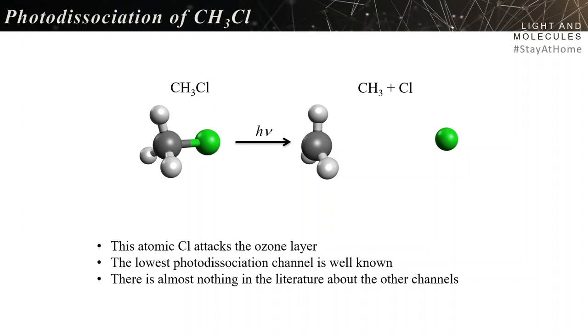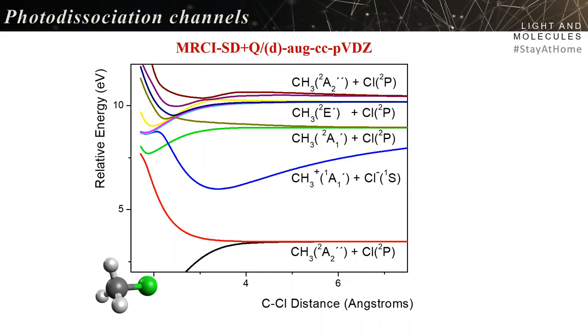Upon UV radiation, methylchlorine breaks into methyl radical plus chlorine, which is harmful to the ozone layer. The photodissociation is well known in the lowest channels for low energy UV radiation, but at high energy UV people don't know much.